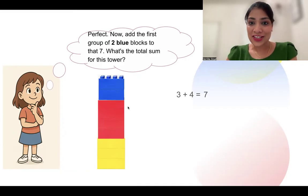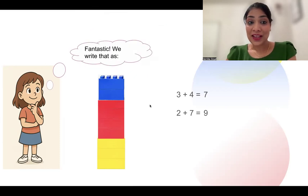Now add the first group of two blue blocks on the top of the tower. What's the total sum for this? So we already calculated 7. Now we add two more. What do we get? 9. So we can write that as 2 + (3 + 4) equal to 9. These brackets show us the group we added first.